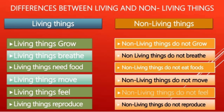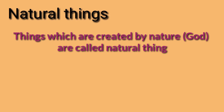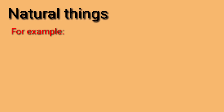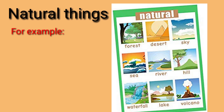Hope you have understood about living things and non-living things. Now let's move to the next part of our lesson — that is natural and man-made things. What do you mean by natural things? Things which are created by nature, that is, created by God, are called natural things. For example, clouds, rain, sun, earth, and so on — all these are natural things.